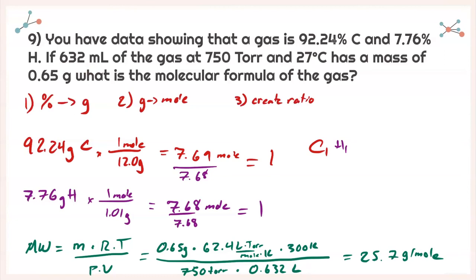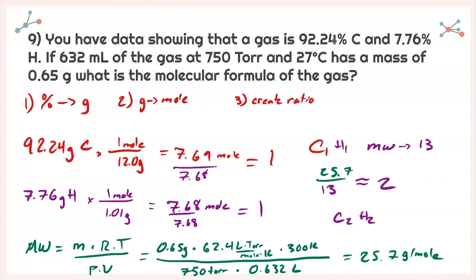Comparing the molar mass from the empirical formula to what we calculated: C1H1 has a molar mass of 13. Dividing 25.7 by 13 gives approximately 2, meaning I need to double my empirical formula to get the molecular formula. The molecular formula is C2H2.